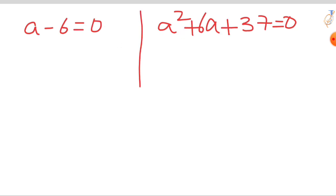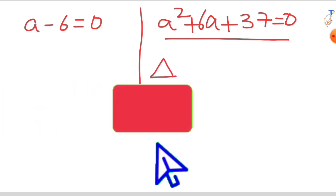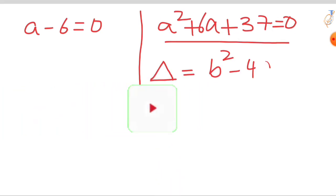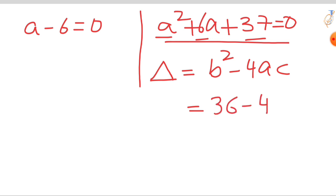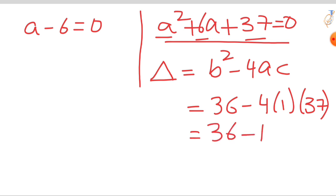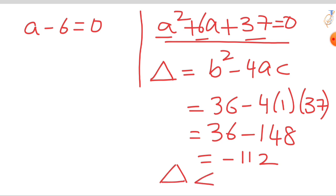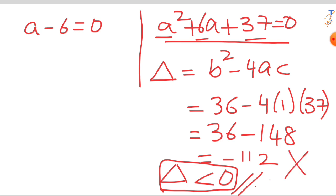We have two equations. Let's first find the roots of the quadratic equation a squared plus 6a plus 37 equals 0 using the discriminant formula: b squared minus 4ac. Here a=1, b=6, c=37. Substituting: 6 squared is 36, minus 4 times 1 times 37 is 148. So the discriminant is 36 minus 148, which equals minus 112. Since the discriminant is negative, this equation yields imaginary roots. But the original equation specifies that x is a real number, so this case is not considered.